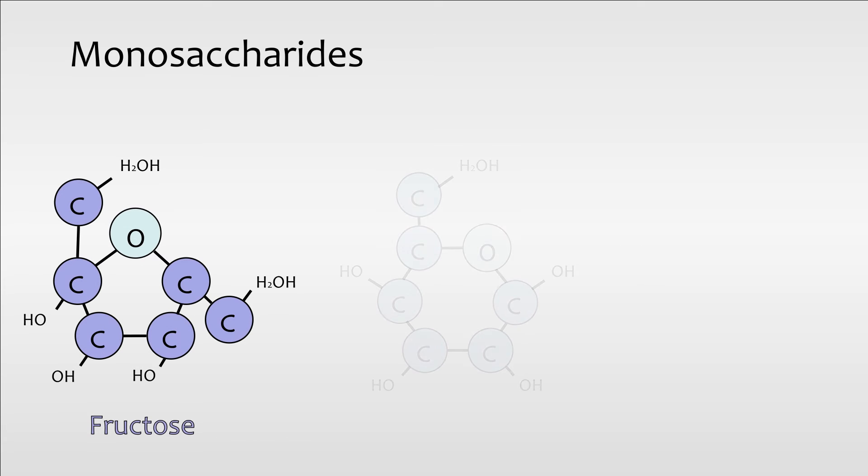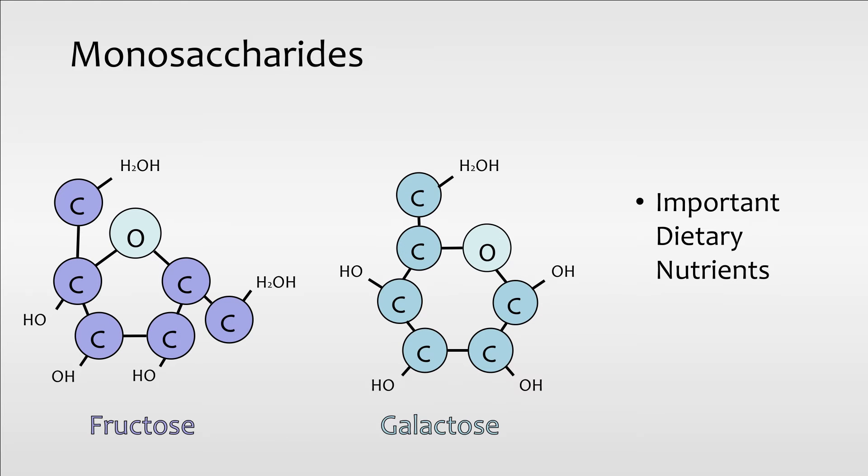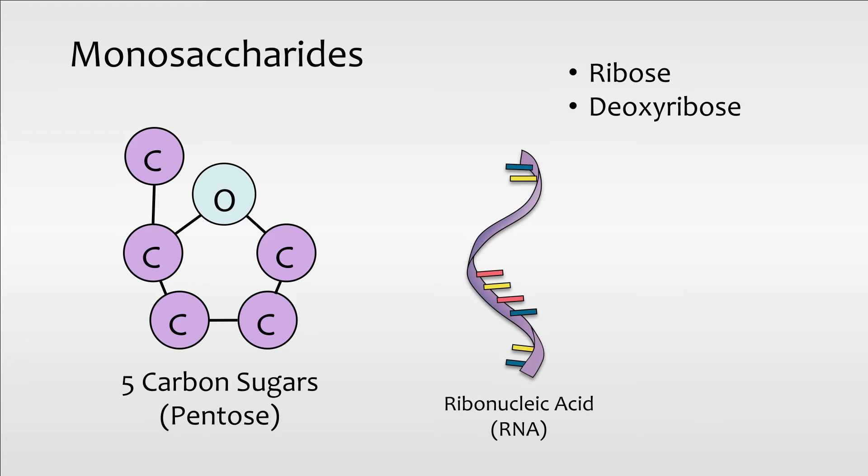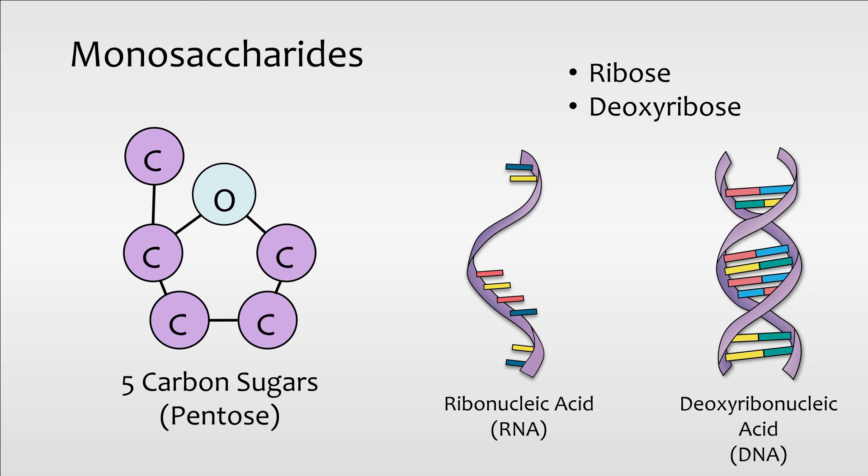Fructose and galactose are also important dietary nutrients in our daily intake. The 5 carbon sugars such as ribose and deoxyribose form the components of ribonucleic acid (RNA) and deoxyribonucleic acid (DNA). These components are part of our genes.